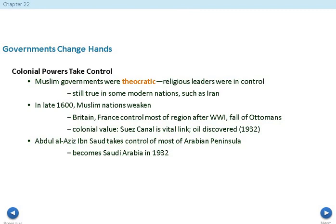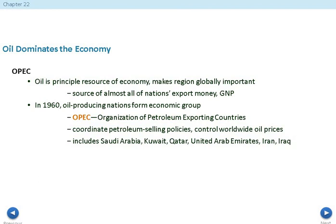Colonial interests valued the Suez Canal as a vital link connecting the Mediterranean Sea to the rest of the world, bypassing the Strait of Gibraltar. Abdullah al-Saud took control of most of the Arabian Peninsula, and in 1932 the name Saudi Arabia was established. In 1960, a prominent group called OPEC was formed — the Organization of Petroleum Exporting Countries — including Saudi Arabia, Kuwait, Qatar, United Arab Emirates, Iran, and Iraq. Their main goal is to control worldwide oil prices.